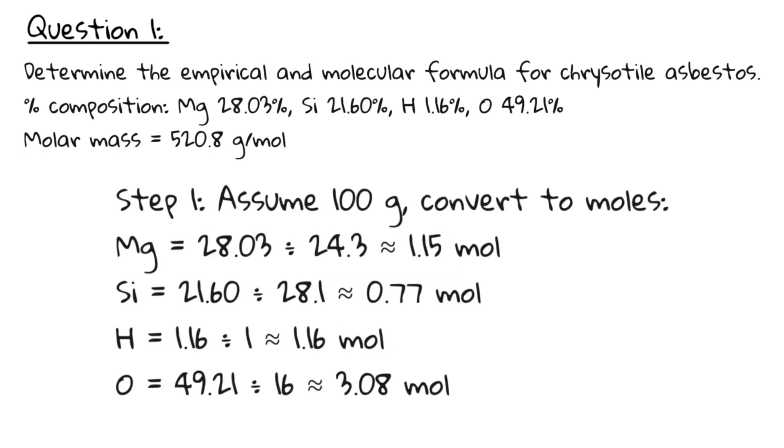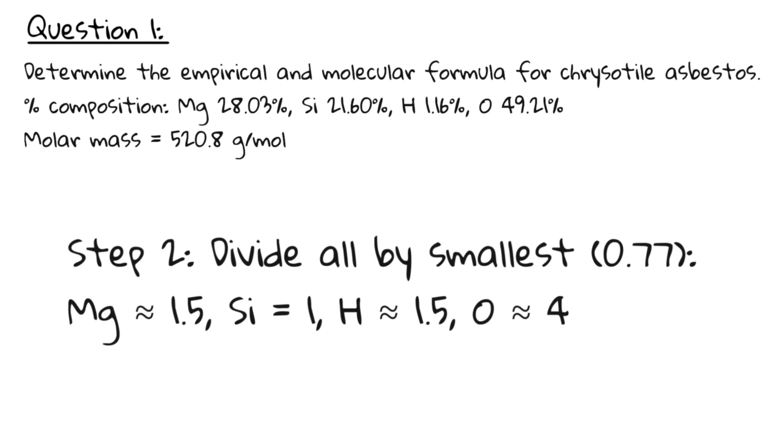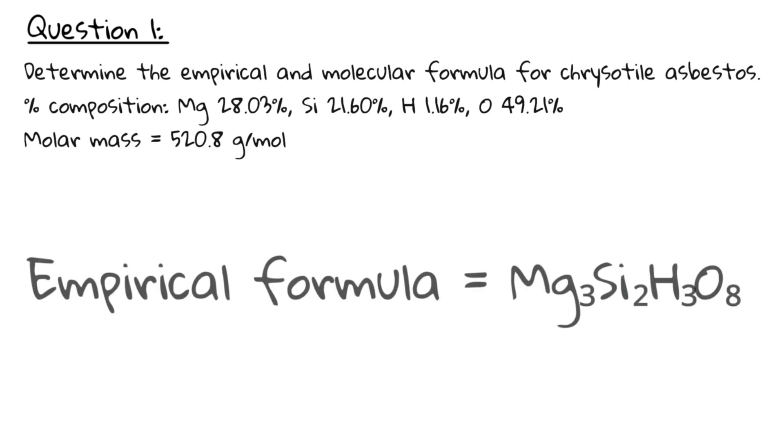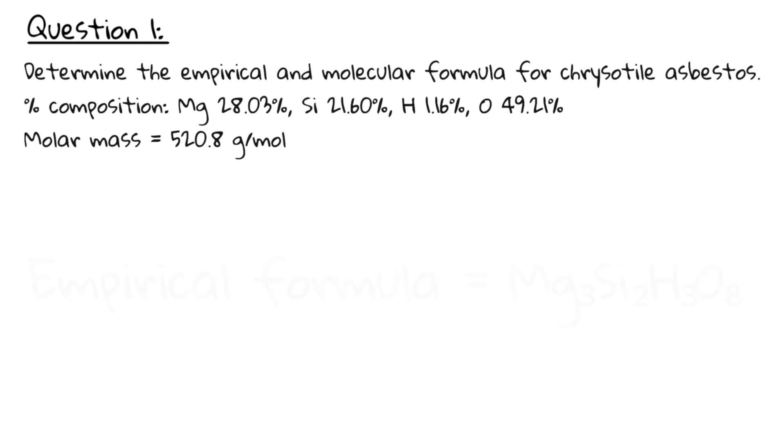Step one. We assume 100 gram and convert to moles. Step two. We divide all moles by the smallest. In order to get whole numbers, we multiply by two and round. This gives us the following ratio: Mg3, Si2, H3 and O8, which is our empirical formula.